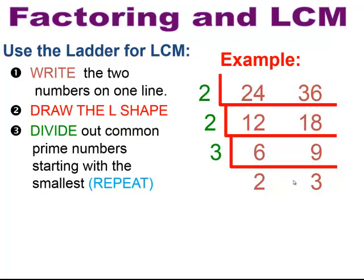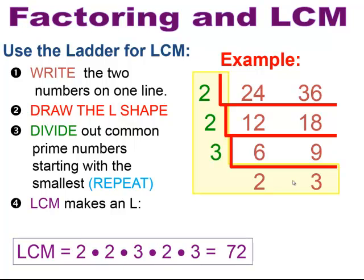Now there's no more common factors. So now I can find my least common multiple by multiplying the L shape on the outside of numbers. All the numbers on the outside create that L. I multiply all these numbers together and that will give me my least common multiple, which in this case would be 72 for 24 and 36.